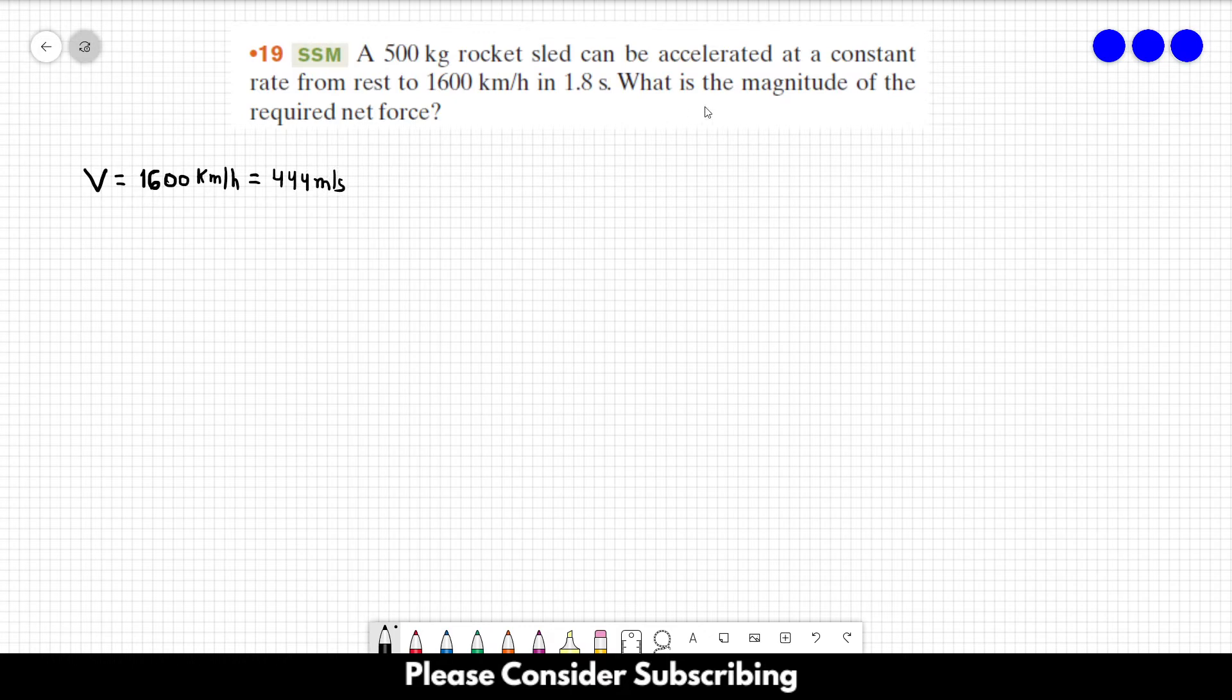We know that the acceleration is constant, so we can use the equation V equals V₀ plus AT. We know that the initial velocity is zero, so we can isolate the acceleration, which is equal to V over T.